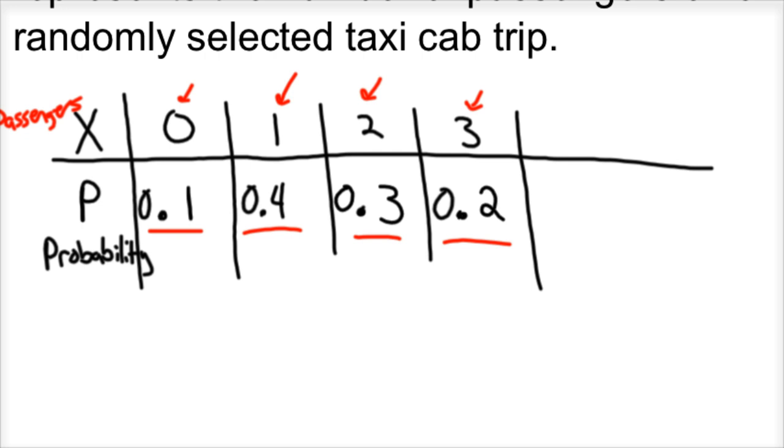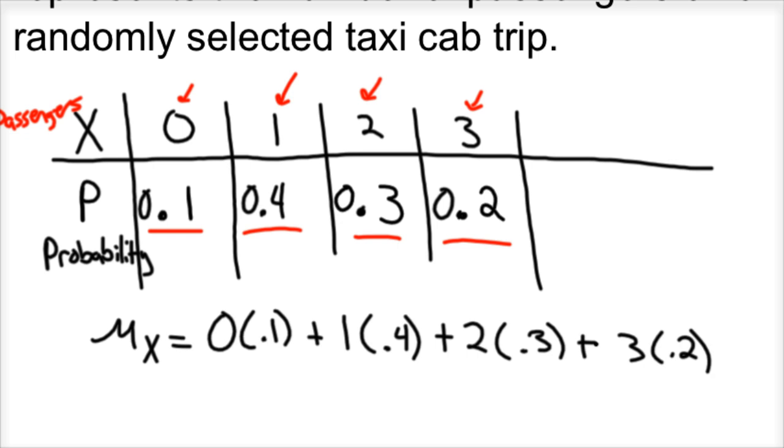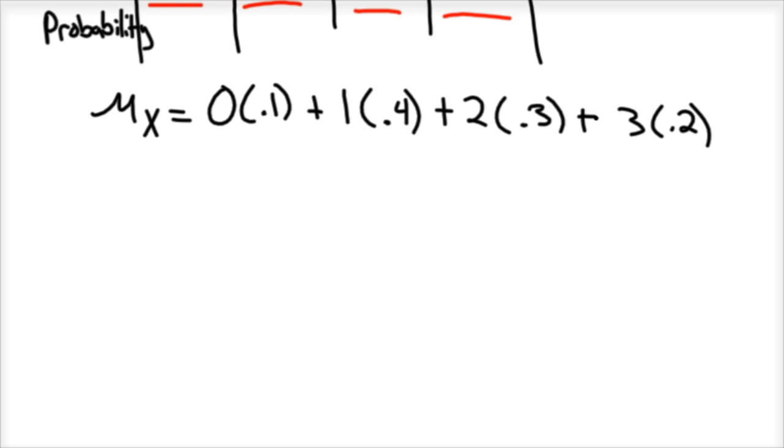First thing you need to do is calculate the expected value. So mu sub X would equal 0 times 0.1 plus 1 times 0.4 plus 2 times 0.3 plus 3 times 0.2. We can expect, if you calculate this out, we can expect 1.6 passengers on a randomly selected taxi cab ride.